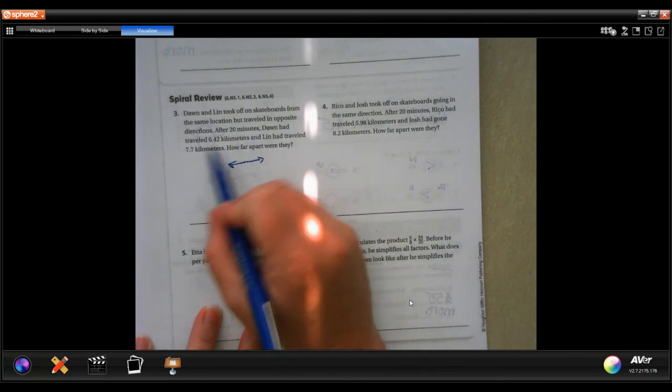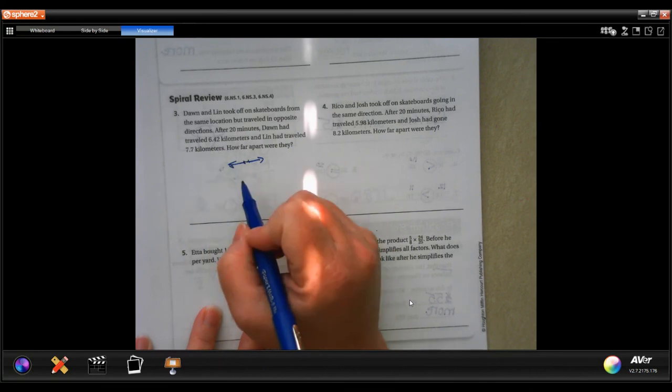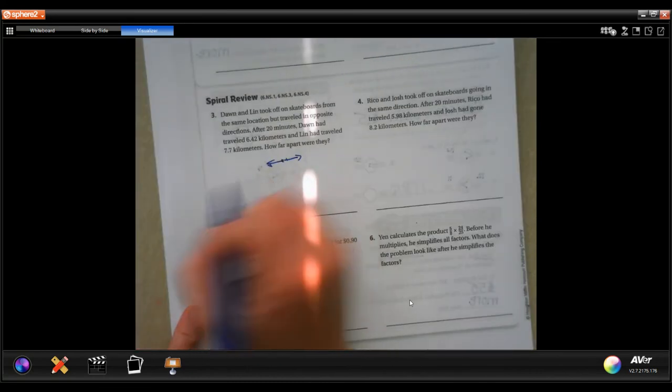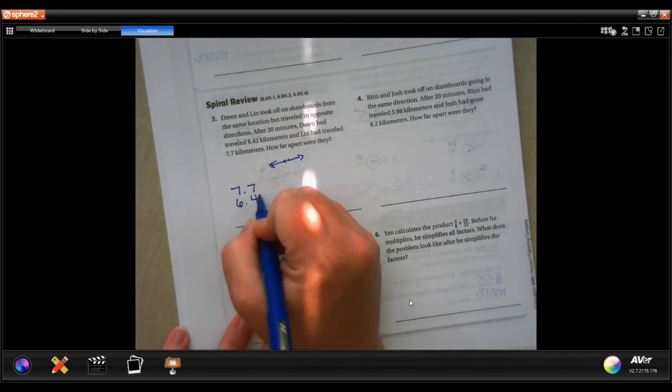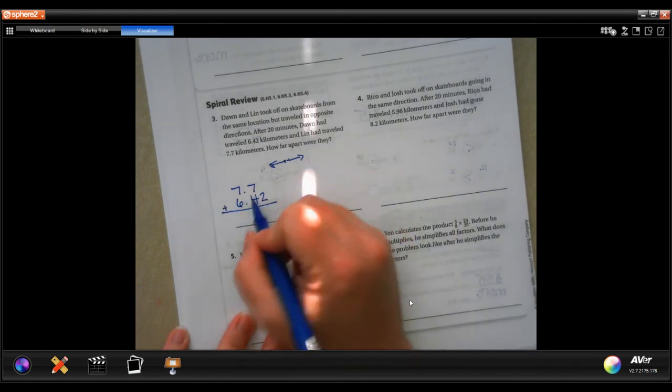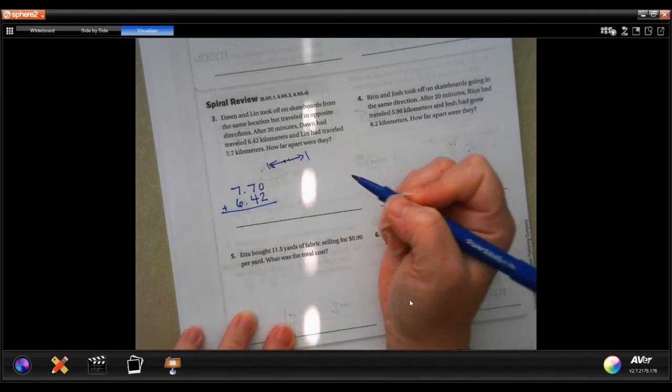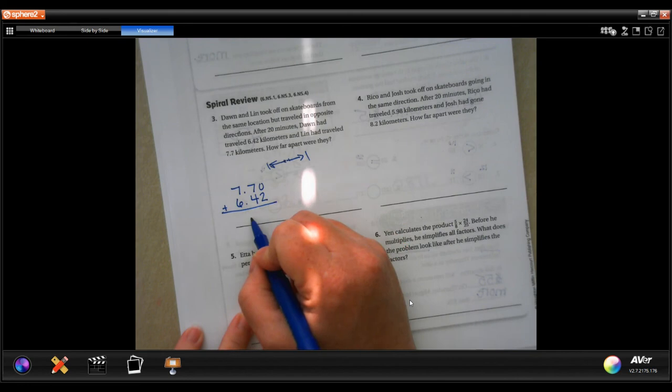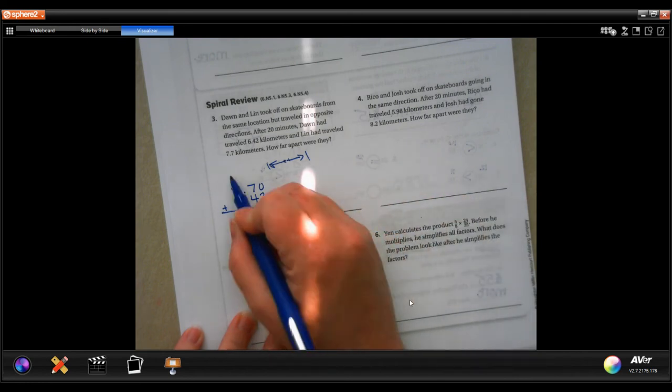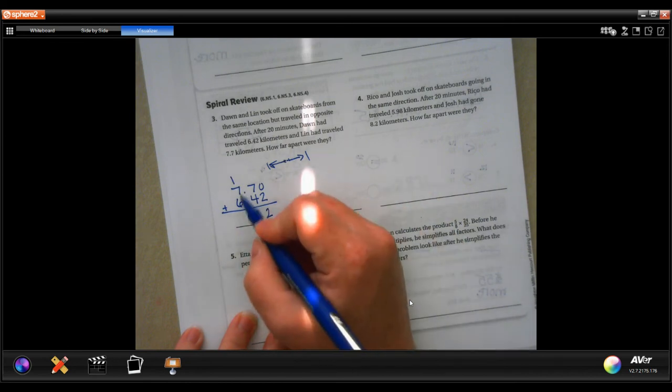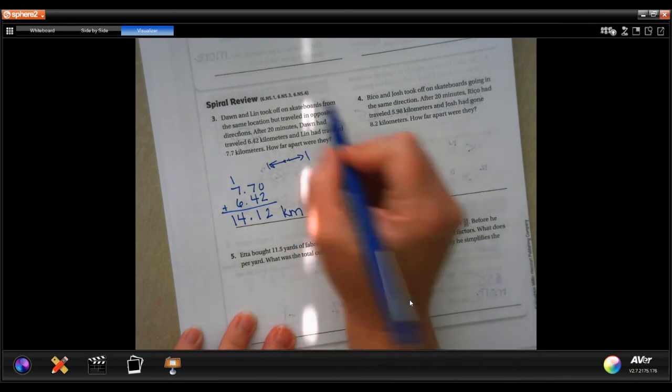That means we're not going to subtract because that would only give us the tiny bit of the difference between the two. We're going to actually add those numbers because that will tell us how far apart here and here are. I'm going to put a zero right there. I'm going to drop my decimal first thing. Zero plus two is two, seven plus four is eleven, carry the one. One plus seven is eight, plus six is 14. And that is in kilometers.